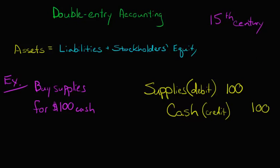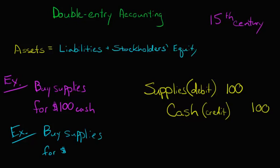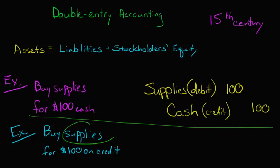Now, what if we didn't buy supplies for $100 cash, but we instead purchased them on credit? Let's think about how that would turn out with a different example. We'll buy supplies for $100 on credit. We know that we're still adding $100 of supplies, so we're still going to have a debit of supplies for $100.